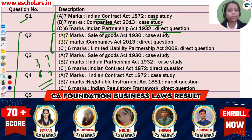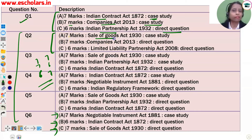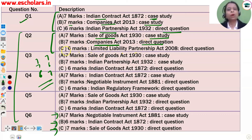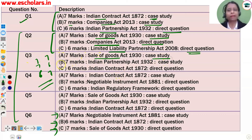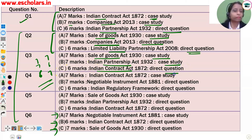Question number 2: Part A (7 marks) comes from the Sale of Goods Act — case study-based. Part B (7 marks) comes from the Companies Act — direct question. Part C (6 marks) comes from LLP — direct question. Question number 3: Part A comes from the Sale of Goods Act, Part B from Indian Partnership Act, and Part C from the Indian Contract Act — direct question.